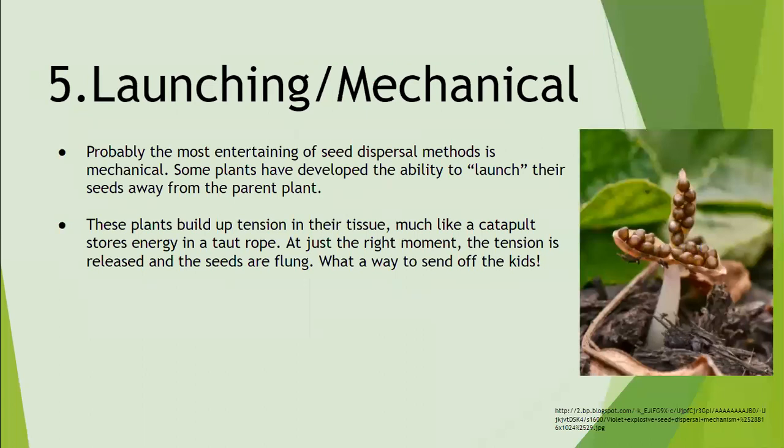The last method is launching, or mechanical dispersal. Probably the most entertaining of seed dispersal methods, some plants have developed the ability to launch their seeds away from the parent plant. These plants build up tension in their tissue, much like a catapult stores energy in a rope. At just the right moment, the tension is released and the seeds are flung — what a way to send off their kids.